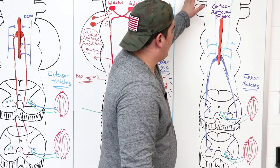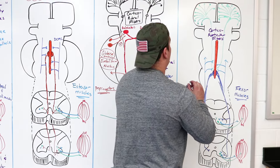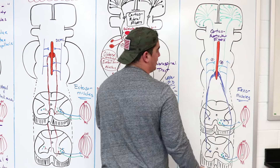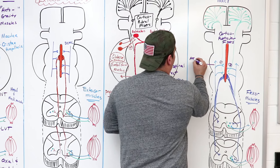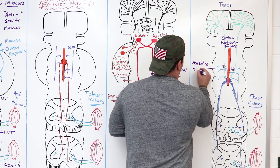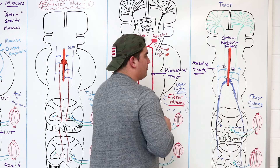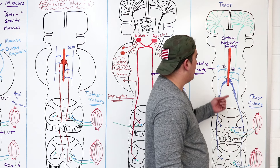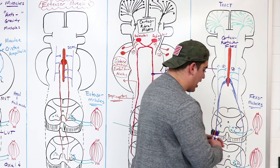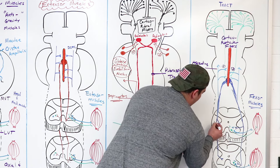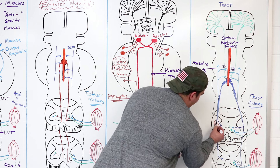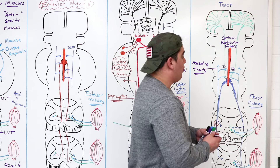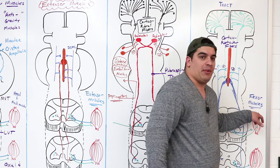So for the medullary reticulospinal, the important things: stimulation comes heavily from the cortex, but it can also get information from ascending tracts. The nuclei within the reticular formation send axons down into the lateral white column, giving collaterals into the anterior ventral gray horn. They stimulate flexor muscles.